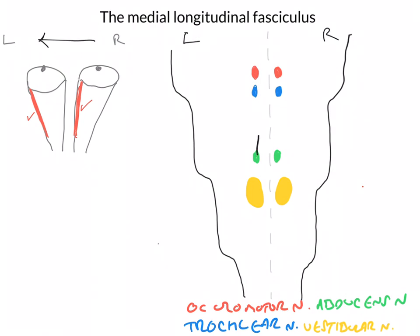So the green abducens nucleus is connected to the red oculomotor nucleus. Likewise, if we want to look to the right, we connect the abducens nucleus to the oculomotor nucleus in the opposite direction. What we have in the medial longitudinal fasciculus is a whole load of crisscrossing connections between the different nuclei responsible for eye movements. Any combination of eye movements that need to be coordinated across the two sides has a connection for that in the MLF. You just need to be aware that these pathways exist and that they're able to coordinate eye movements.